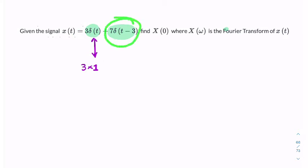What's the Fourier transform of a delayed impulse? We can use the time shift property. The time shift property says that if we delay something by, in this case, 3 seconds,